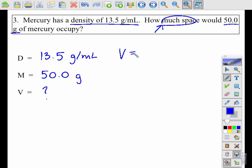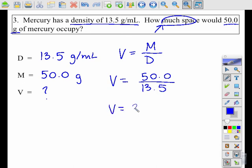Use our density triangle. Find our formula, which is V equals M over D, mass divided by density. Plug in your numbers without units. So the mass is 50, the density is 13.5. Divide, round to two decimal places.